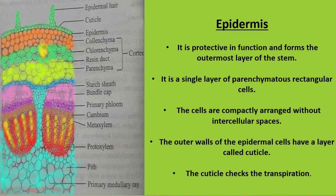Epidermis is the outermost layer of the stem which performs the protection function. In the picture, the green colored single layer of cells is the epidermis, made up of parenchymatous rectangular-shaped cells. This layer is compactly arranged without any intercellular space — no space can be found between two cells.